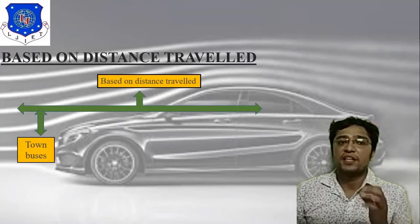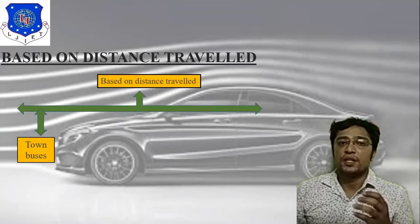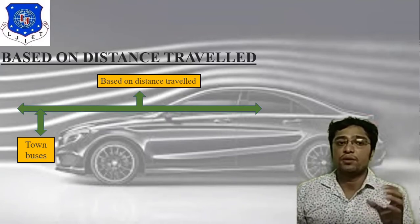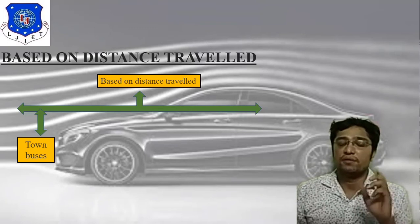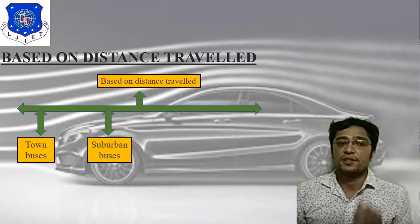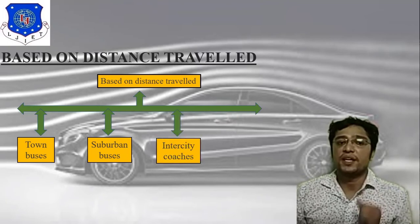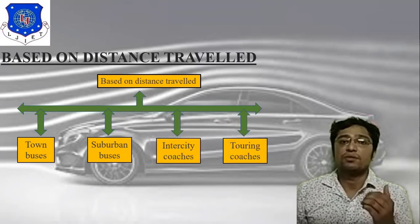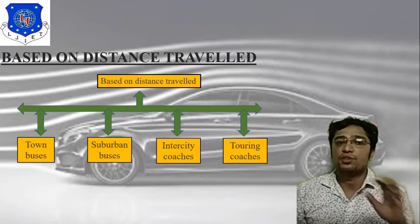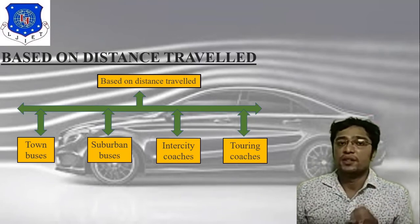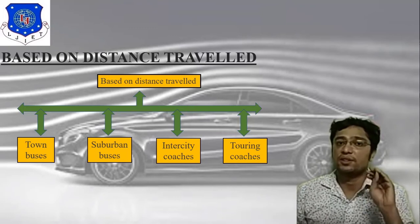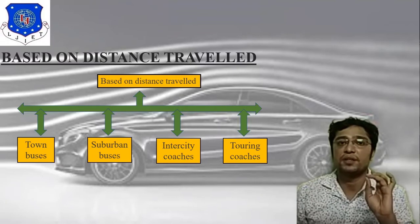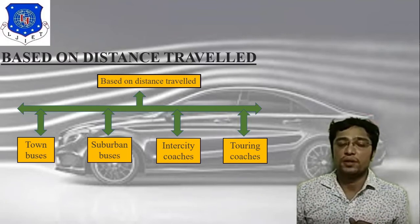Based on distance traveled, there are four types. First is the town bus. Second is the sub-urban bus. Third is intercity coaches. Fourth is the touring coach. These four categories cover the classification of bus bodies according to distance travel.